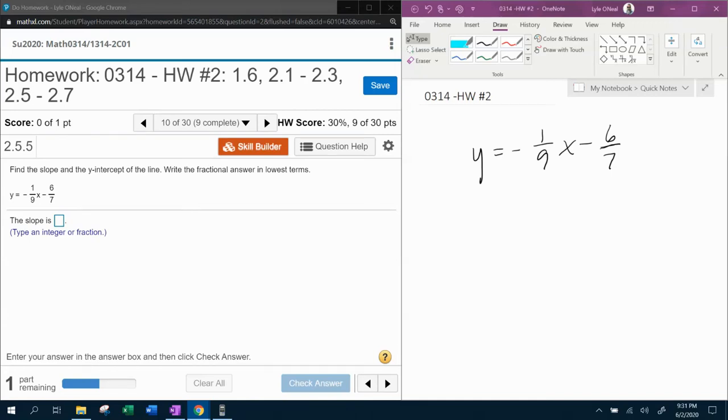All right, here we go. Question number 10 from our 0314 homework number 2 in my lab math. They want us to find the slope and the y-intercept of the line. Notice it says write the fractional answer in lowest terms. And so where do we start?